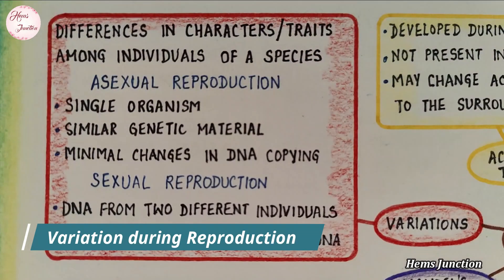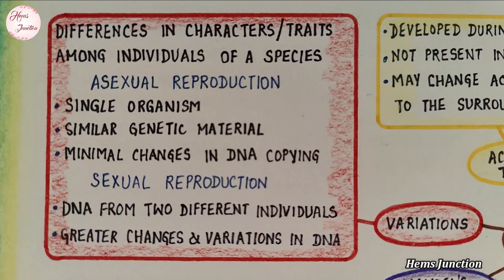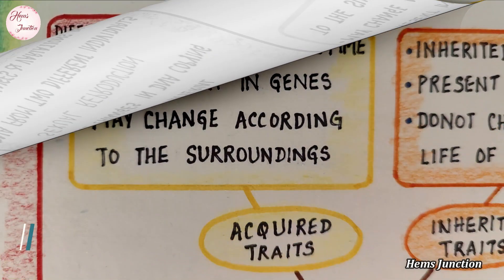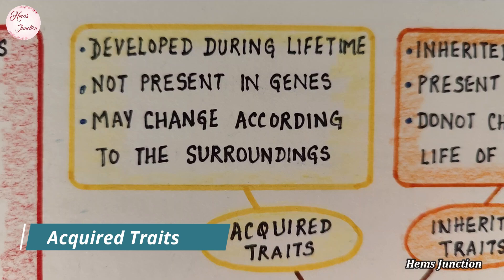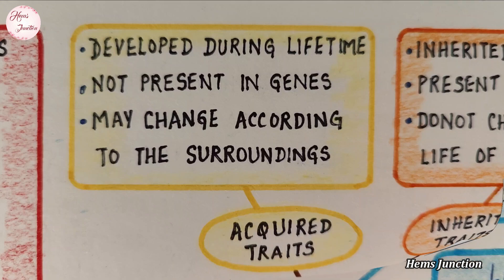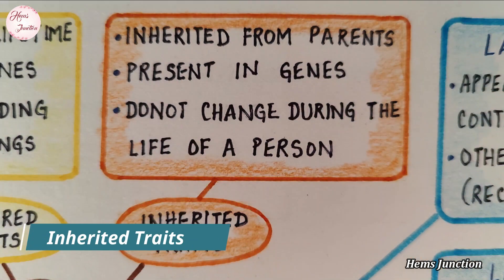Variation during reproduction: it is the differences in characters or traits among individuals of a species. Acquired traits. Inherited traits.